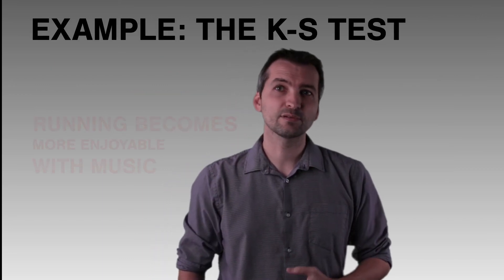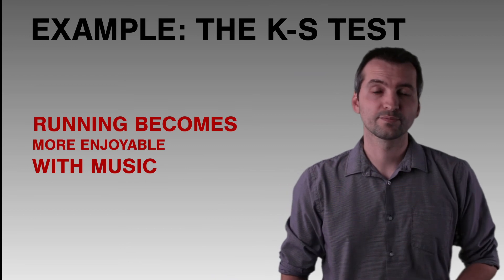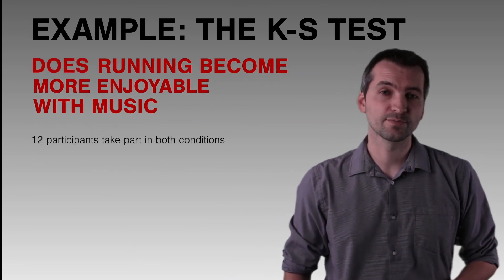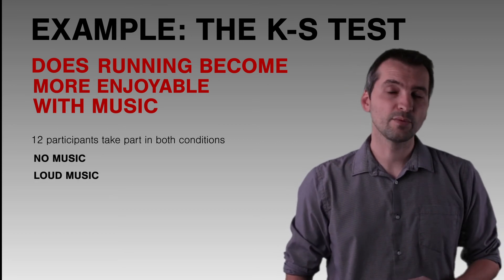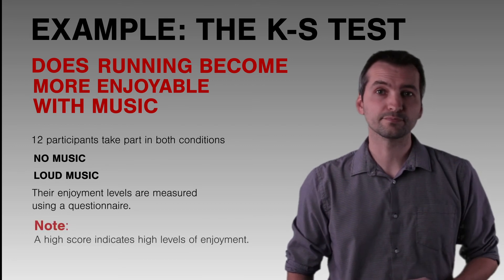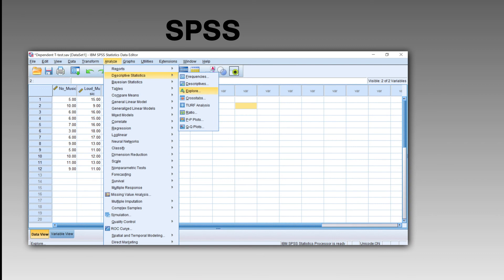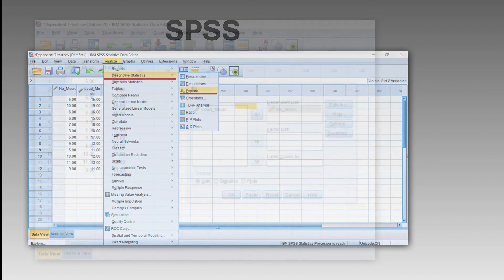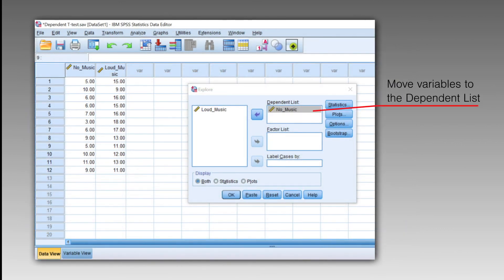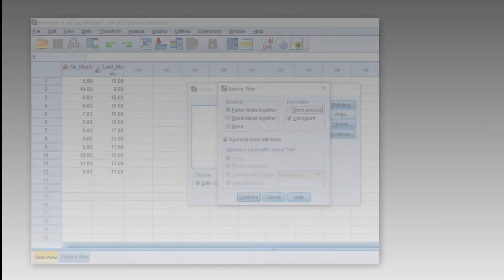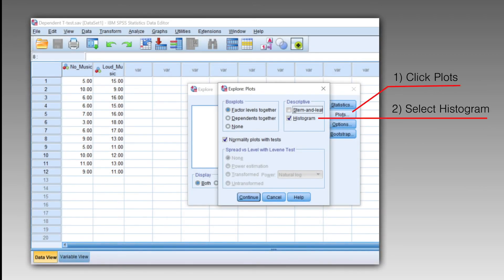For example, suppose we want to see if running becomes more enjoyable with music. We ask 12 participants to complete two conditions: one with no music and one with loud music, then report enjoyment levels on a questionnaire. To assess whether scores meet the normality assumption, we run the KS test in SPSS. In SPSS, click Analyze, Descriptive Statistics, then Explore. Move all variables to the dependent list, click Plots, select Histogram, tick the Normality box, and click Continue — that box runs the KS test.